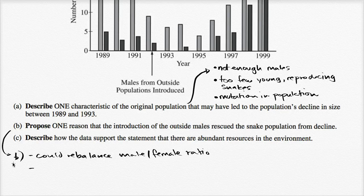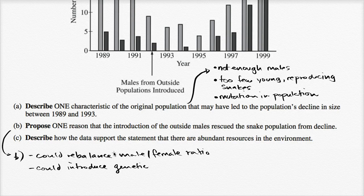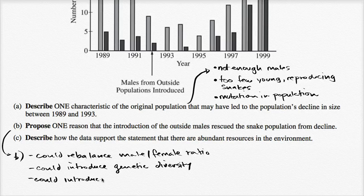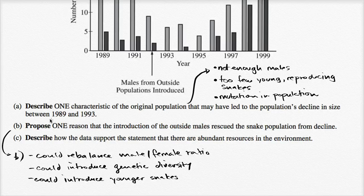Introducing outside males could also introduce genetic diversity, so you don't have the harmful mutation. This is a small, isolated population — those are triggers in your head that say there might not be a lot of genetic diversity there. The introduced male snakes might also have been younger, introducing younger snakes into the population. They didn't tell us the age of the outside males, but these are theories based on what we were told. Once again, you only have to describe one reason, such as rebalancing the male-female ratio.